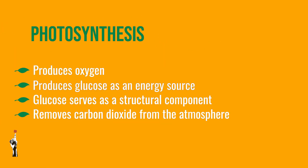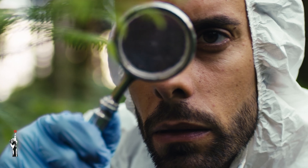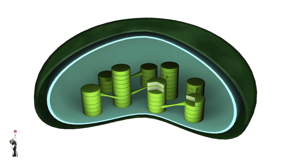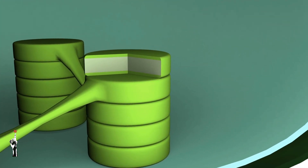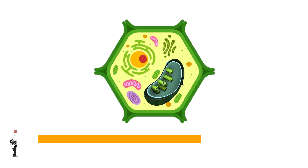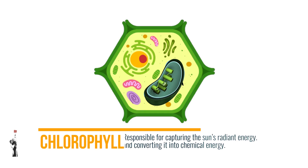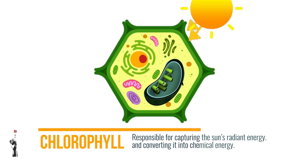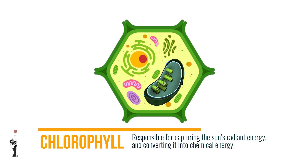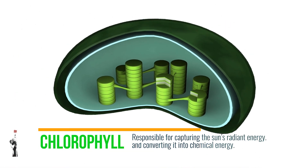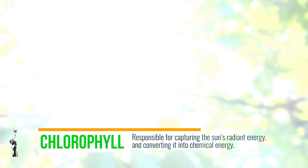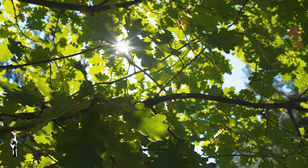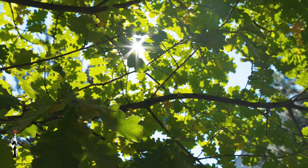Let's focus our attention on where in the plant photosynthesis actually takes place. Chloroplasts are the site where photosynthesis takes place in the plant cell. They contain chlorophyll, which is responsible for capturing the sun's radiant energy and converting it into chemical energy. Chlorophyll is a green pigment found in chloroplasts, so all the green parts of the plant contain chloroplasts. Leaves have a high concentration of chloroplasts because they are exposed to the most sunlight.